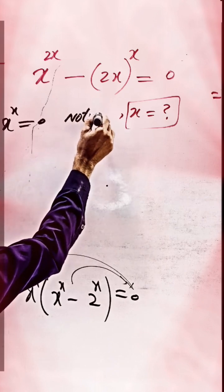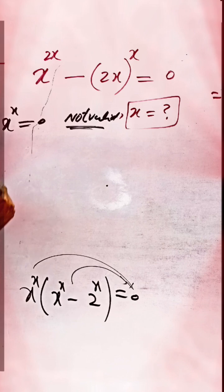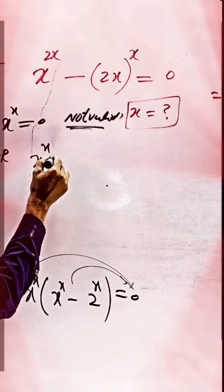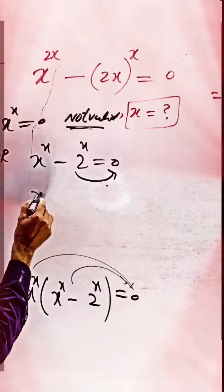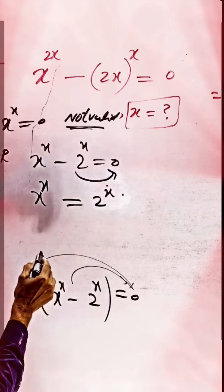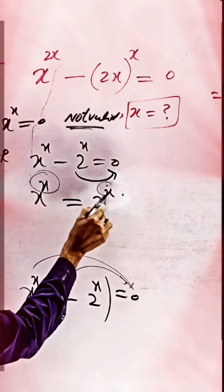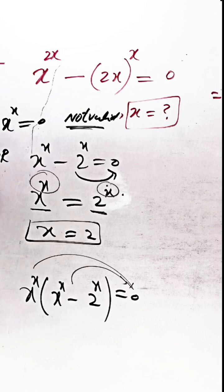Similarly, x to the power of x minus 2 to the power of x equals 0. We transfer this result: x to the power of x equals 2 to the power of x. Now powers are same, so we are comparing the base: x equals 2 is the solution of this question.